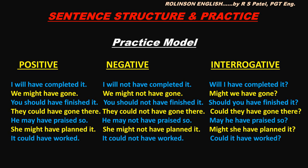For negatives, put 'not' after the first word in the helping verb: I will not have completed it, we might not have gone, you should not have finished it, they could not have gone there, she may not have prayed so, she might not have planned it, it could not have worked. For interrogatives, take the first word in the helping verb before the subject, write it at the beginning and put a question mark: will I have completed it, might we have gone, should you have finished it, could they have gone there, may he have praised so, might she have planned it, could it have worked.